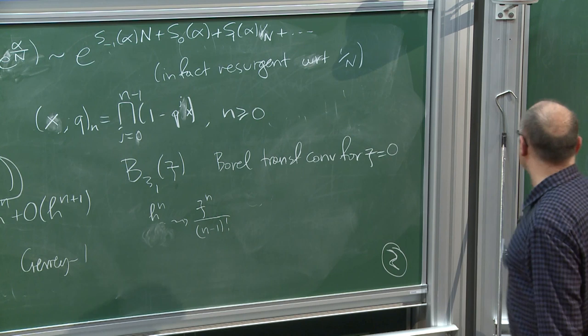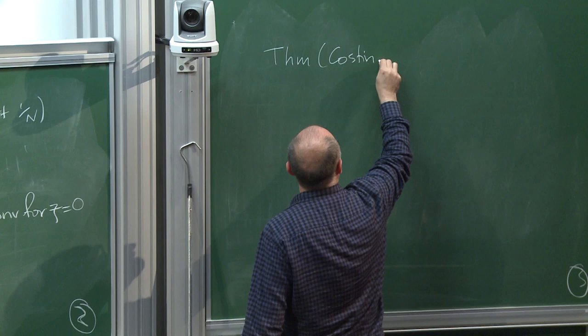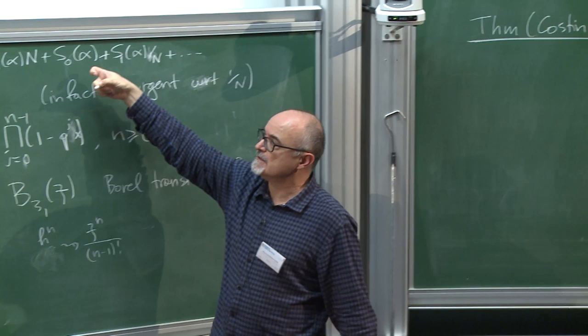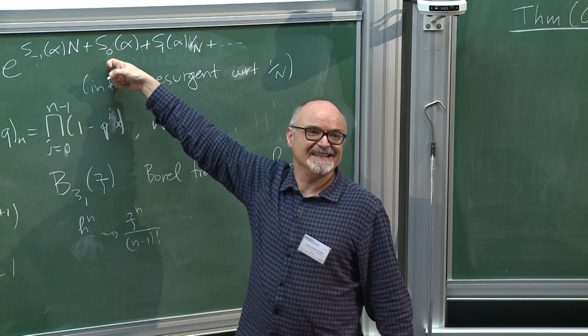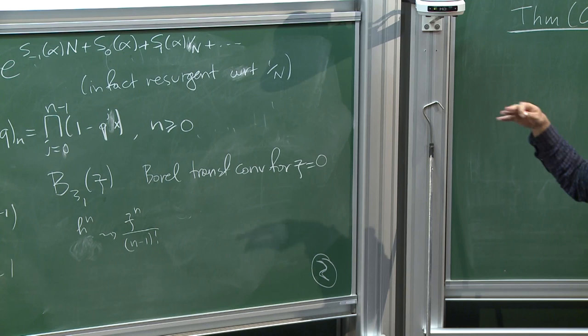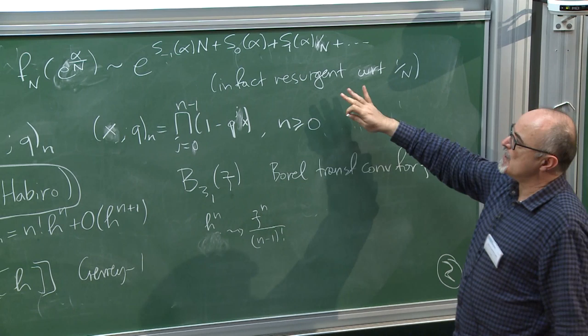To prove resurgence itself would prove the volume conjecture and much more — the generalized volume conjecture and other things. So you can aim for everything. That was my agenda. We settled for something less, and here is a theorem.